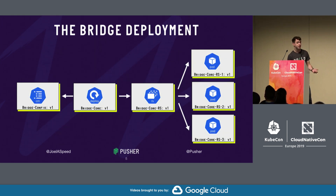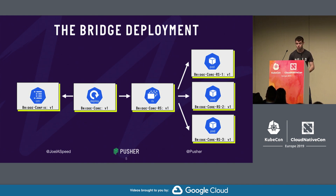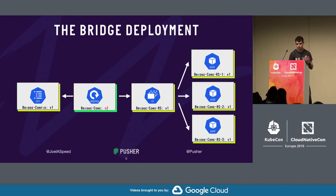To understand that, we need to look at how deployment works. Typically when you're configuring your application, you have a config map and a deployment. The deployment creates a replica set, and the replica set creates pods. When you make a change to the deployment, that in turn creates a new replica set, and the new replica set creates new pods with the new configuration.